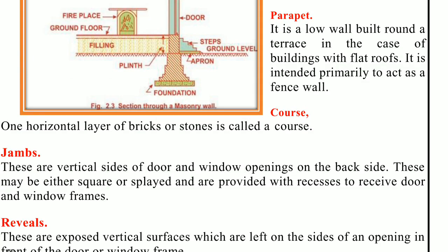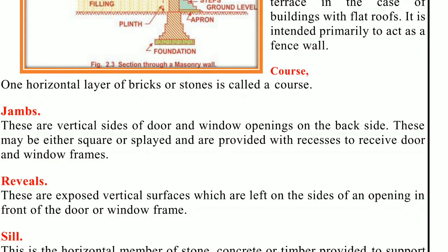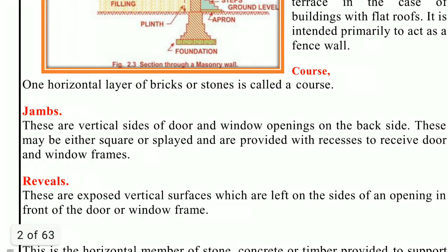Next, the lacing course. The horizontal course provided to strengthen a wall of irregular small stones is known as a lacing course. It may be in the form of either brick masonry or coarse rubble masonry. Next, spalls — the chips of stones used to fill up the empty spaces in the stone masonry are known as spalls. They are generally obtained as a result of reducing big blocks of stone.